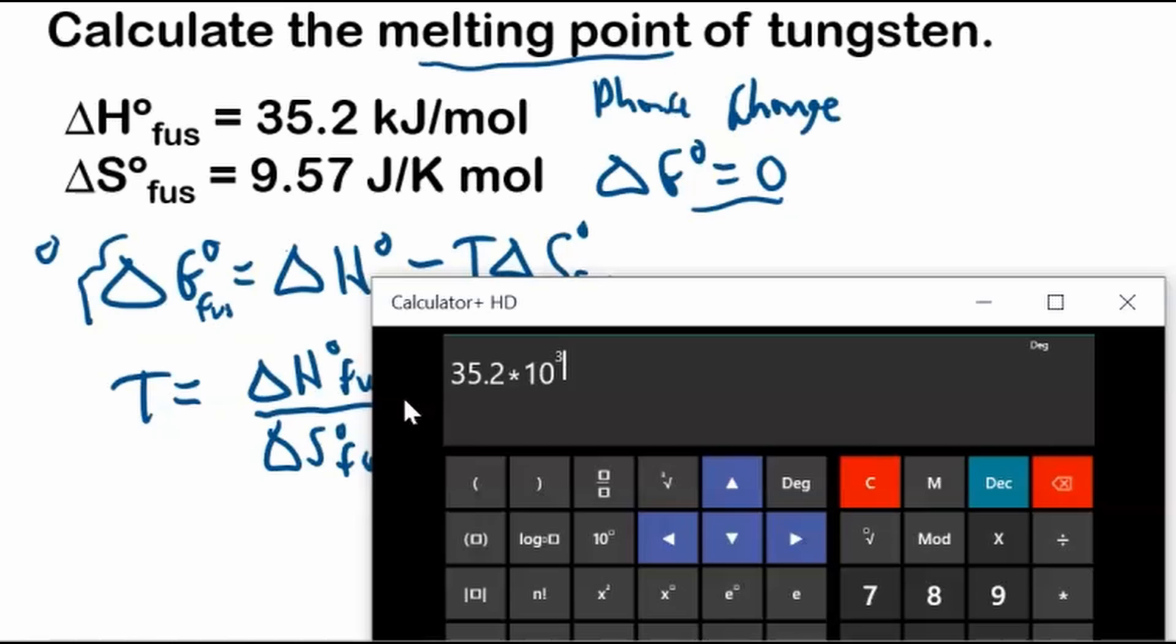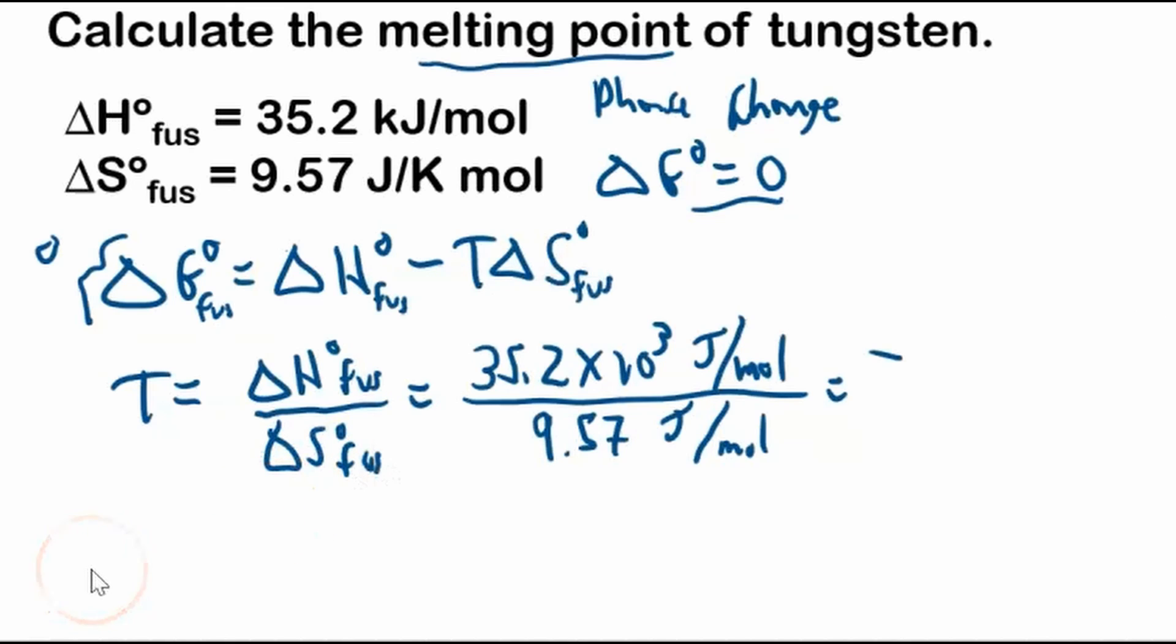Okay, now we'll plug it in. So 35.2 times 10 to the power of 3 divided by 9.57. Oh, that's a very high temperature, but this is tungsten. Okay, so that makes sense. 3678. Now this is in Kelvin.